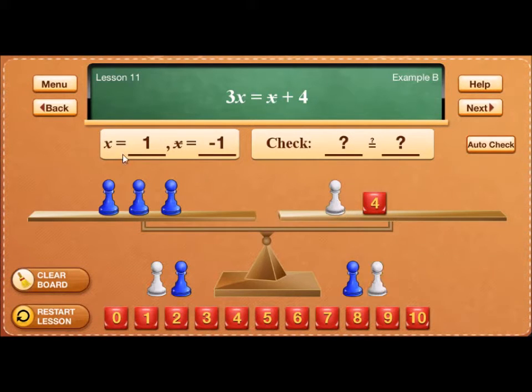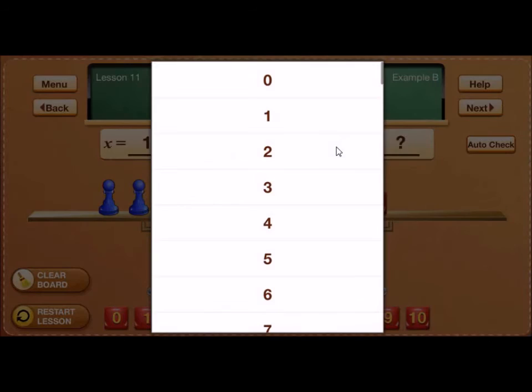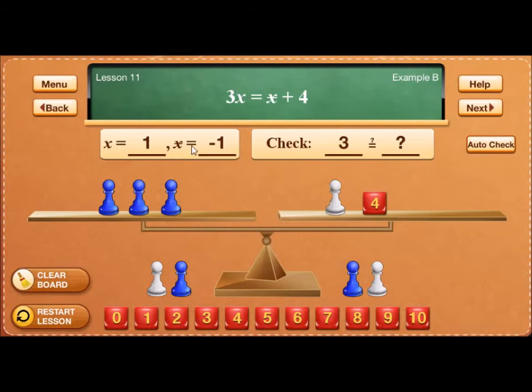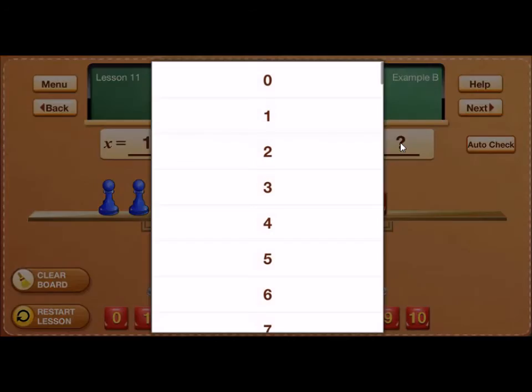And if x is 1, on the left side, I have 3. So the left side of the check will be 3. Now, star is negative 1. So to do the check on the right side, I'll begin with the red cube first. 4, lose 1, is 3.